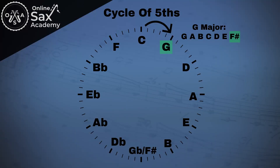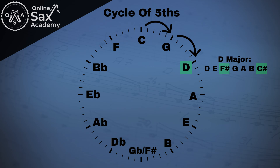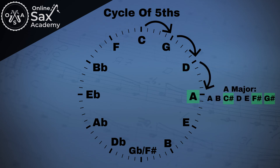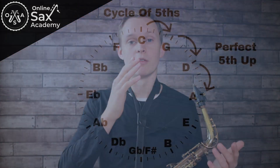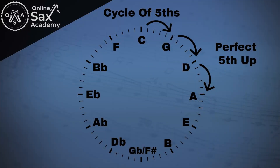So G major has one sharp, F sharp. Then at two o'clock we have D major which has two sharps, and at three o'clock A major has three sharps, and so on. The reason it's called the cycle of fifths is because the distance between each of those keys — from C to G and then from G to D — they're all perfect fifths.